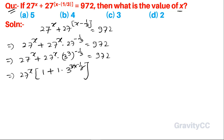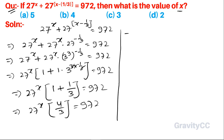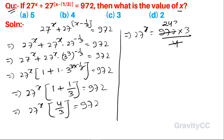The 3s cancel, giving 27 to the power x times 1 plus 1 upon 3, which equals 972. This implies 27 to the power x times 4 upon 3 equals 972. So 27 to the power x equals 972 into 3 upon 4, which simplifies to 729.